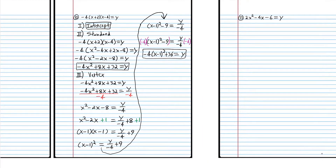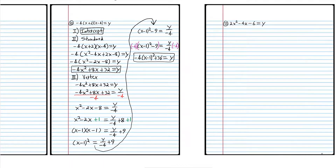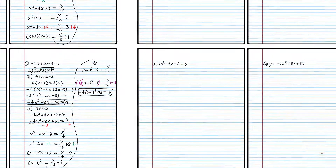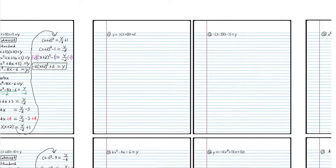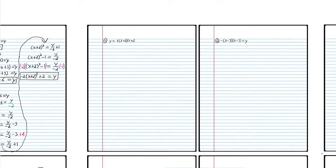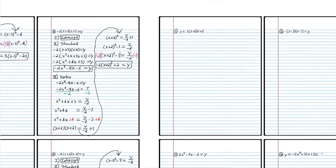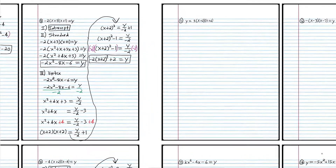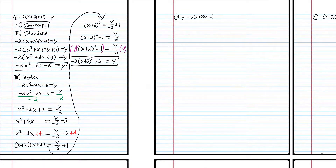Those are the answers — if you got number 10 right, good job. If not, just go back and figure out what you did wrong. On to number 11: I'm going to keep number 8 in the window while you try number 11. When you come back, we'll do it together.